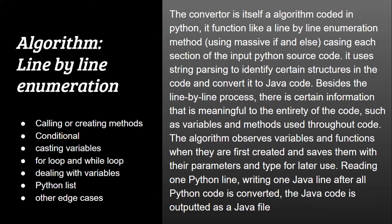Moving on to how the algorithm actually works: the converter itself is an algorithm coded in Python. It functions like a line-by-line enumeration method, using massive if-else statements to case out each section of the input Python source code. It uses string parsing to identify certain structures in the code and convert them to Java code. Besides this line-by-line process, there is certain information meaningful to the entirety of the code, such as variables and functions used throughout. The algorithm observes variables and functions when they are first created, saves them with their parameters and types for later use, and reads one Python line and writes one Java line. After all Python code is converted, the Java code is outputted as a Java file.